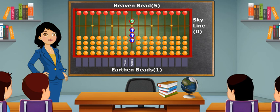To make 8, 1 heaven bead and 3 earthen beads meet at the skyline. That is, 5 heaven plus 3 earthen equals 8.